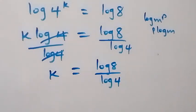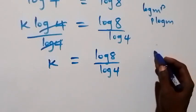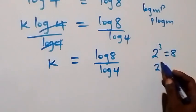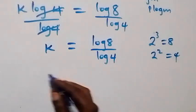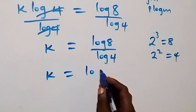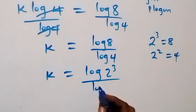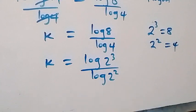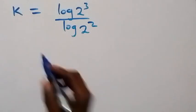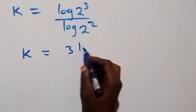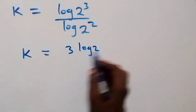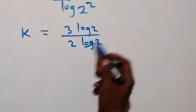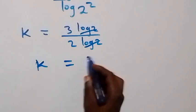From here, 8 can be written as 2 raised to power 3, since 2 multiplied by itself 3 times is 8. And 4 can be written as 2 squared. So this becomes k equals log 2 raised to power 3 over log 2 squared. Applying the power law of logarithms, this becomes k equals 3 log 2 over 2 log 2. The log 2 terms cancel each other, and we get k equals 3 over 2, the same result as Method 1.